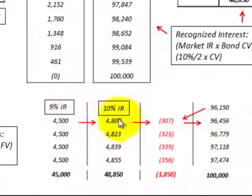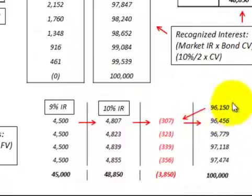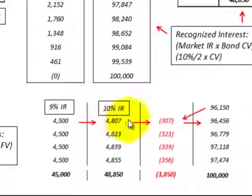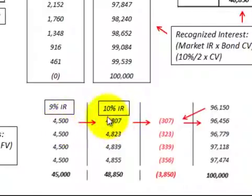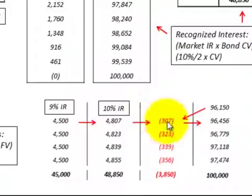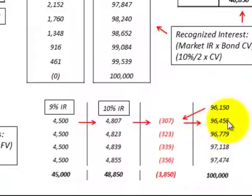We calculate our interest revenue based on the 10% interest rate, or 5% per period, applied to the carrying value of the bond. It starts at $96,150, and 5% times that equals interest revenue of $4,807. We take the difference between the $4,500 interest receivable and the $4,807 interest revenue to get the discount on bonds receivable amount of $307. We add that discount to the carrying value to get the new carrying value of $96,456.